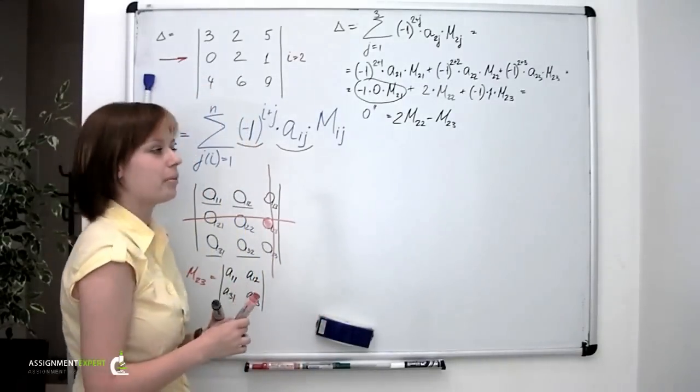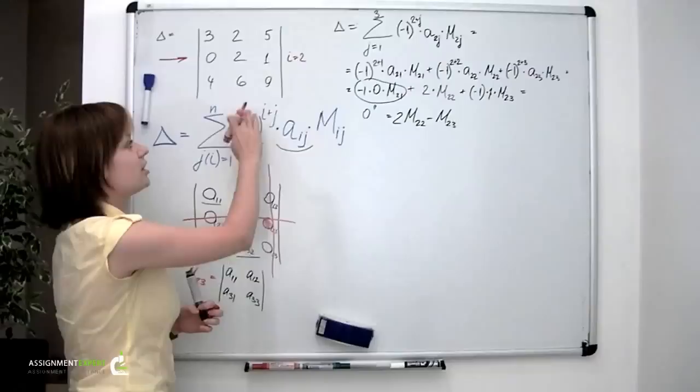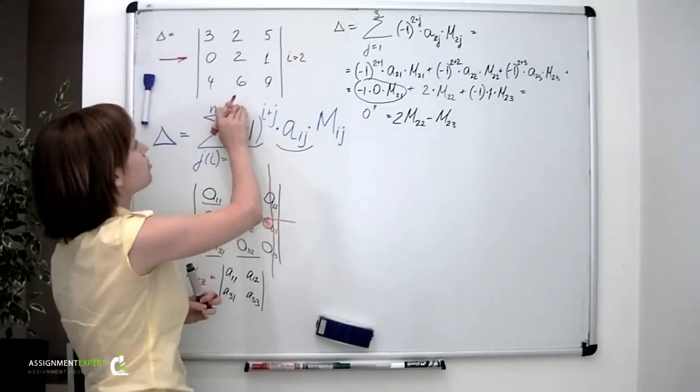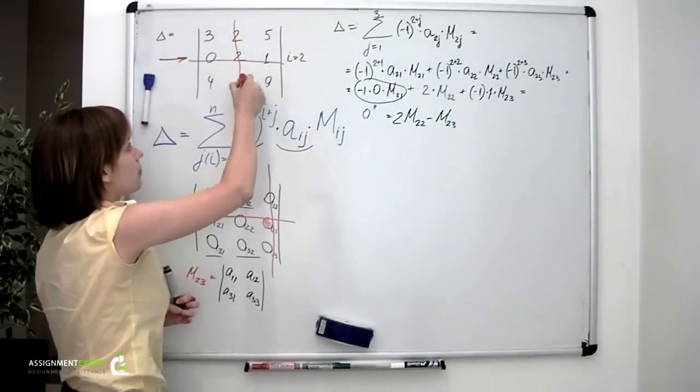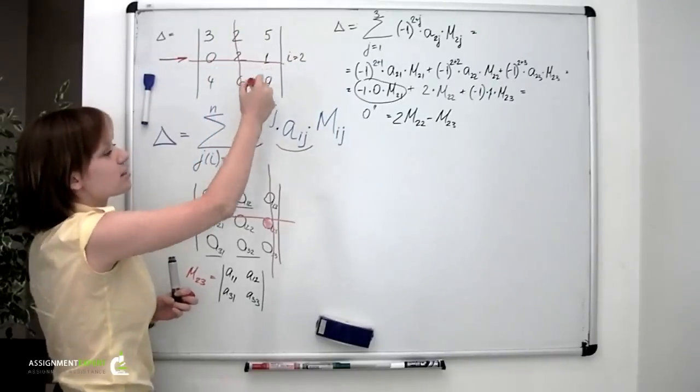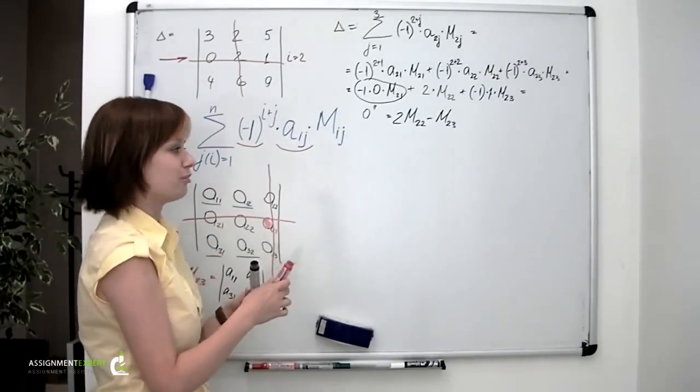Now, minor M2-2 is obtained from the initial one by crossing out the second row and the second column. And then the numbers left will form the determinant, the minor we were looking for.